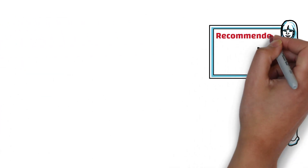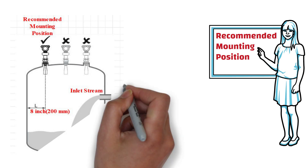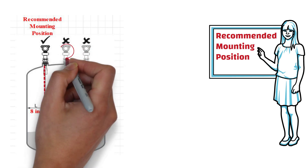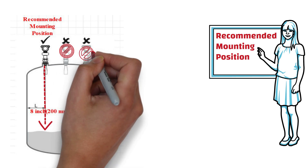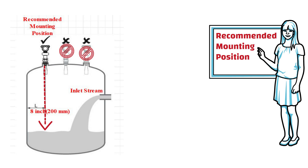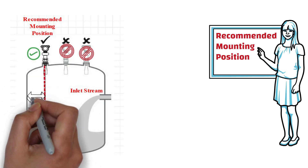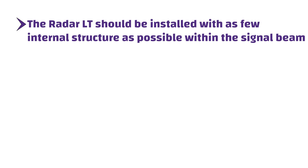First of all, let's learn the recommended guidelines to install a radar level transmitter. For optimal performance, the transmitter should be installed in locations with a clear and unobstructed view of the product surface. Do not mount the transmitter in the center of the tank, and do not mount it close to or above the inlet stream. Ideally, the transmitter should be installed on the other side of the inlet stream, and the minimum distance to the tank wall should be 8 inches or 200 millimeters. The transmitter should also be installed with as few internal structures as possible within the signal beam.